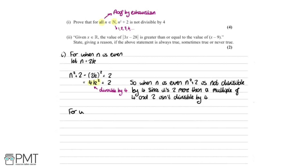Now we need to try for when n is odd. We let n equal 2k + 1, since an odd number is just one more than an even number. So n² + 2 equals (2k + 1)² + 2.